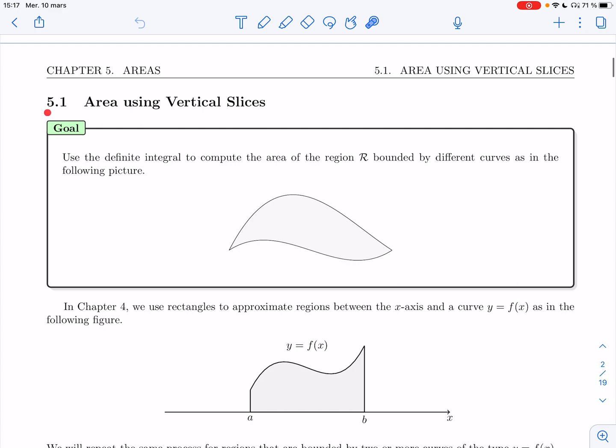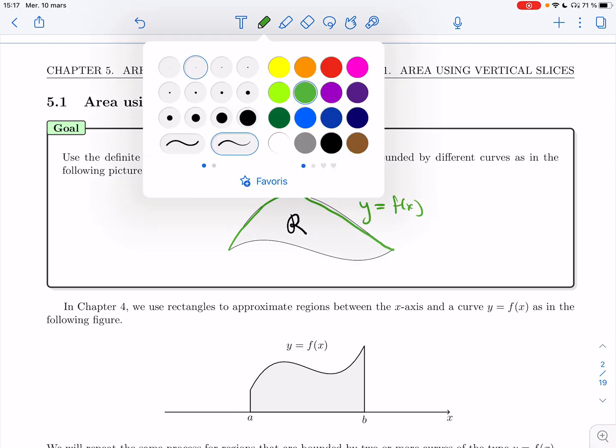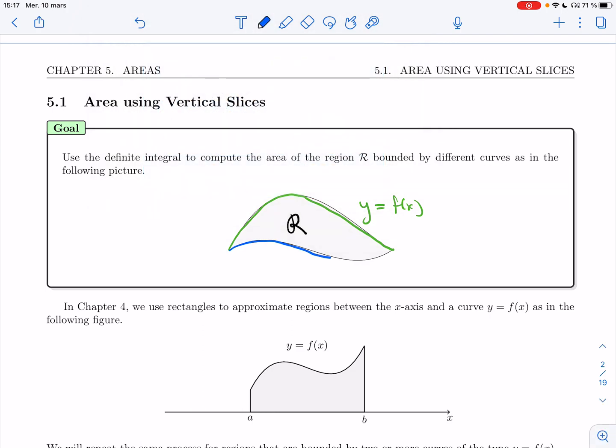Alright, so let's start. Our goal is to use area to find geometric regions. So in this Section 5.1, we'll use the definite integral to compute the area of the region R bounded by different curves. For example, we could have y equals f of x, and we could have y equals g of x.